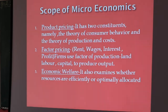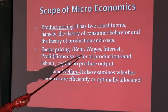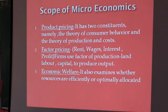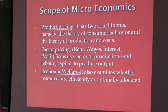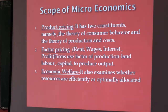Next is factor pricing, which mainly covers four factors: rent, wages, interest, and profit. If we use land, we pay rent. If we have labor, we provide wages. If we take a loan, we pay interest. If we run a business, we earn profit.